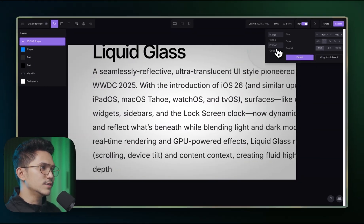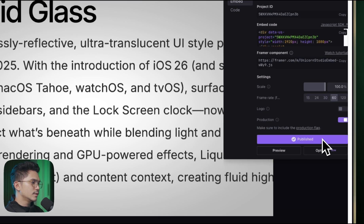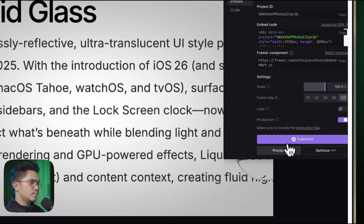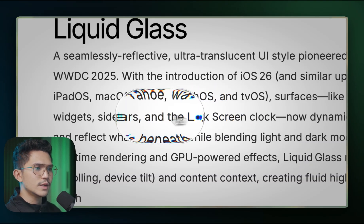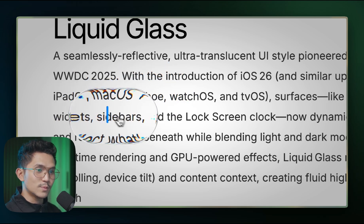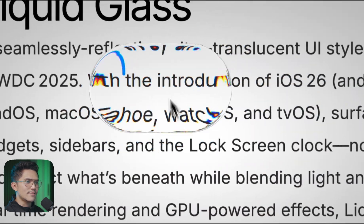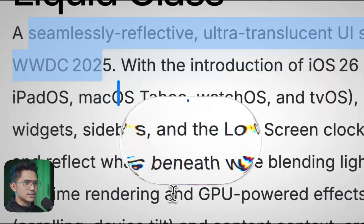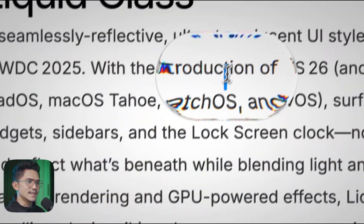Now export and preview. Set it to production at 120, publish it, and go to preview. As you can see, it's actually really fast. The effect is doing its thing — we have that glass effect right there. You can select text and the cursor is working as intended.